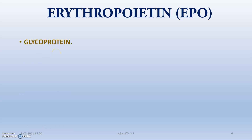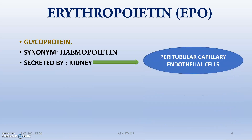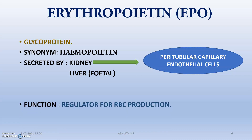Erythropoietin is a glycoprotein, with the synonym hemopoietin, secreted by the kidney — specifically the peritubular capillary endothelial cells. In the case of a fetus, the liver is also producing this hormone, erythropoietin. Its function is as a regulator for RBC production, and the stimulus is hypoxia.